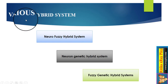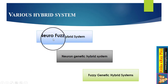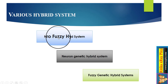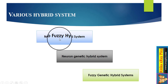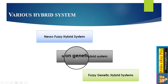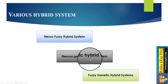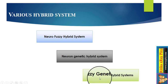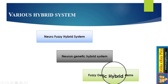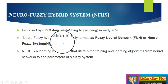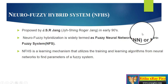There are different types of hybrid systems. When we combine neural networks with fuzzy logic, the result is a neuro-fuzzy hybrid system. When we combine neural networks with a genetic system, the result is a neuro-genetic hybrid system. When we combine fuzzy logic with a genetic system, the result is a fuzzy-genetic hybrid system.